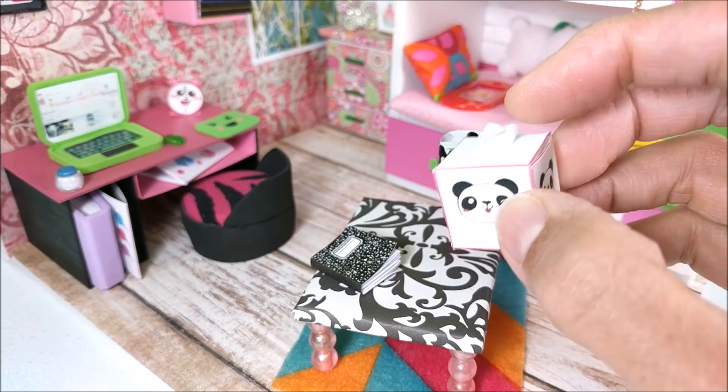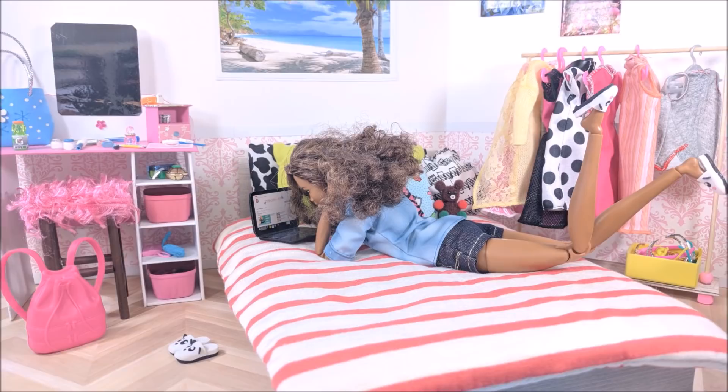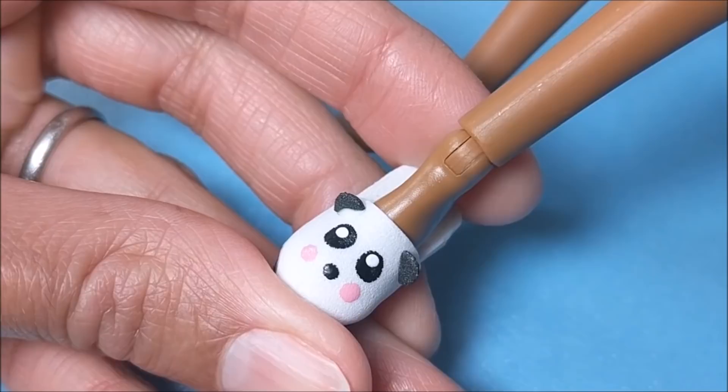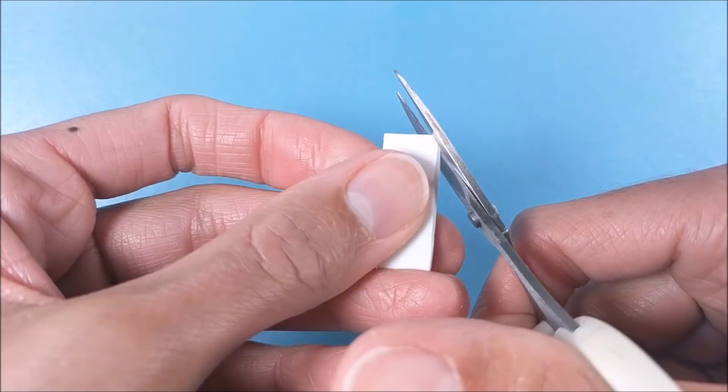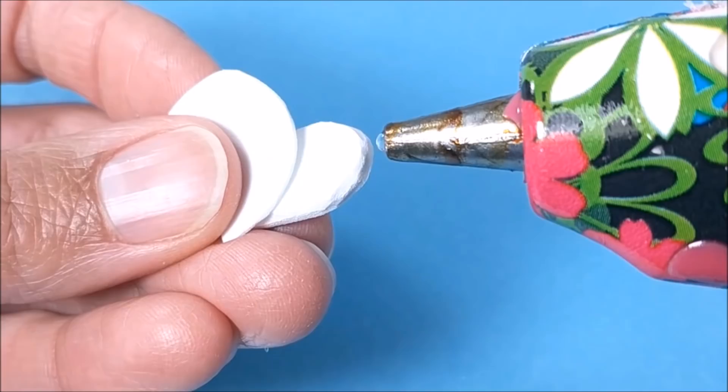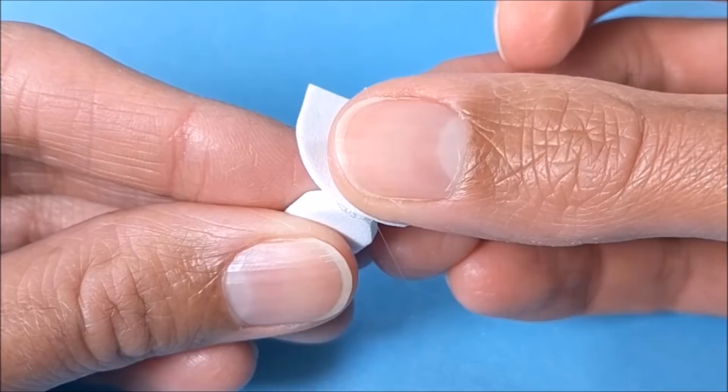And finally, the panda slippers. I start with a thick piece of craft foam, cut to size, shape, then use thin craft foam and carefully glue it along the front.